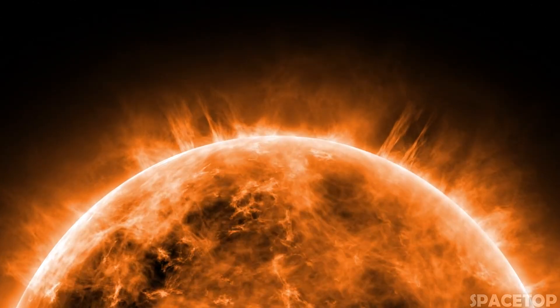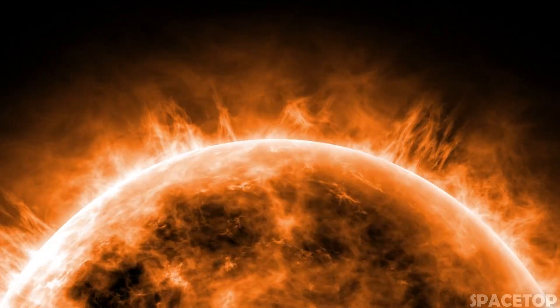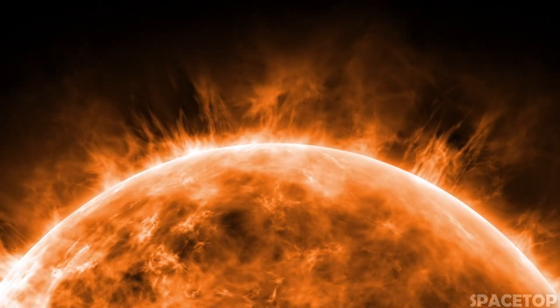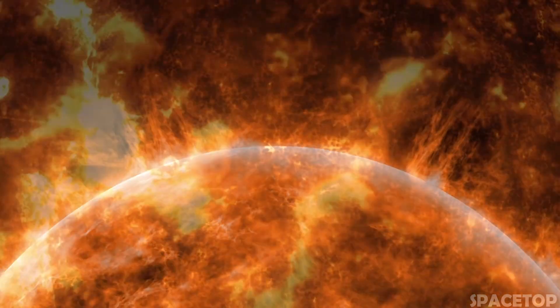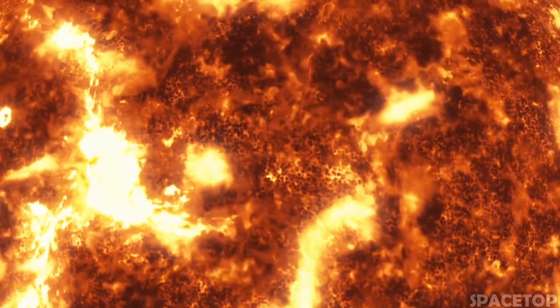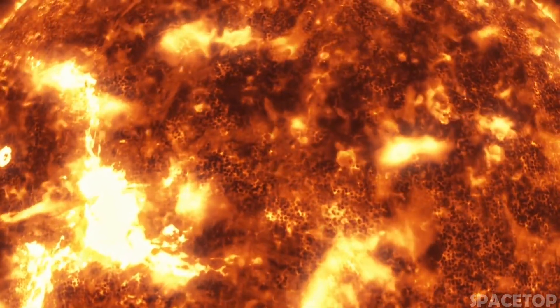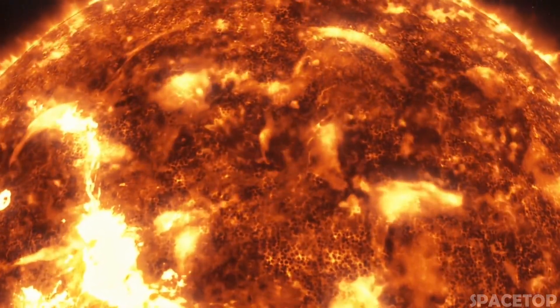Like any other red giant, CW Leonis is at the final stage of its life. Its age is not precisely determined, but it is estimated to be several billion years old. It is assumed that once CW Leonis was a blue-white star with a mass about five times the mass of the Sun.